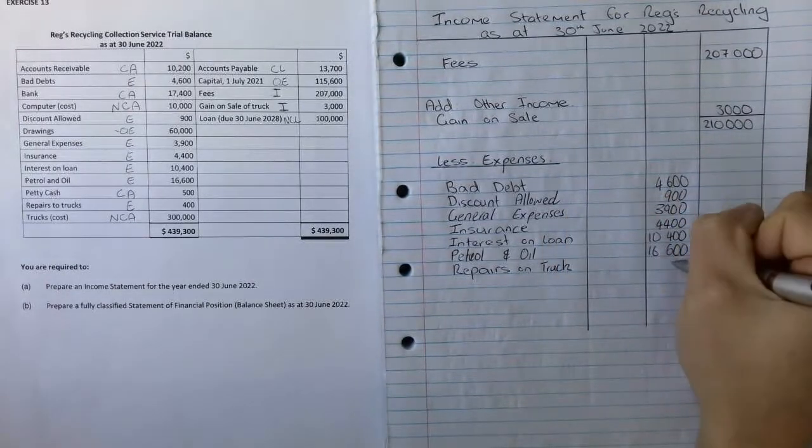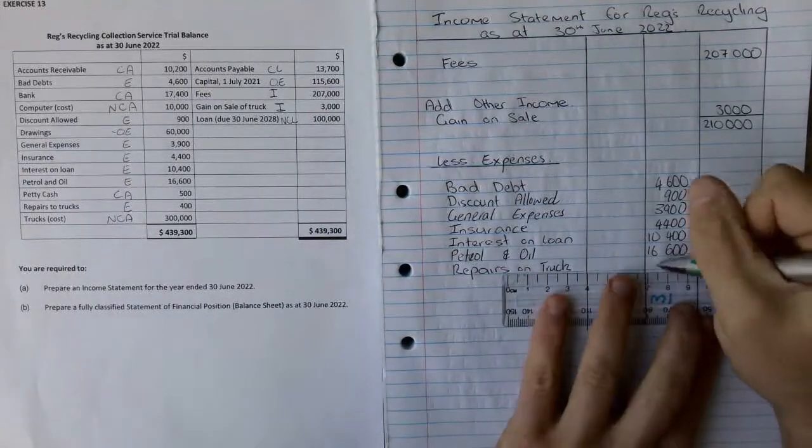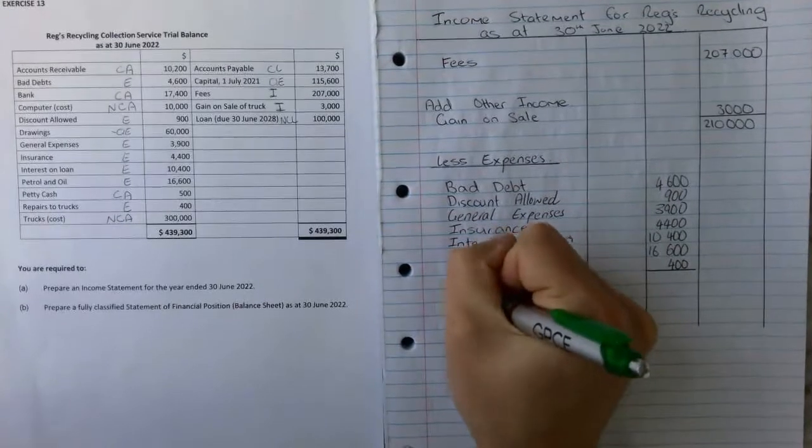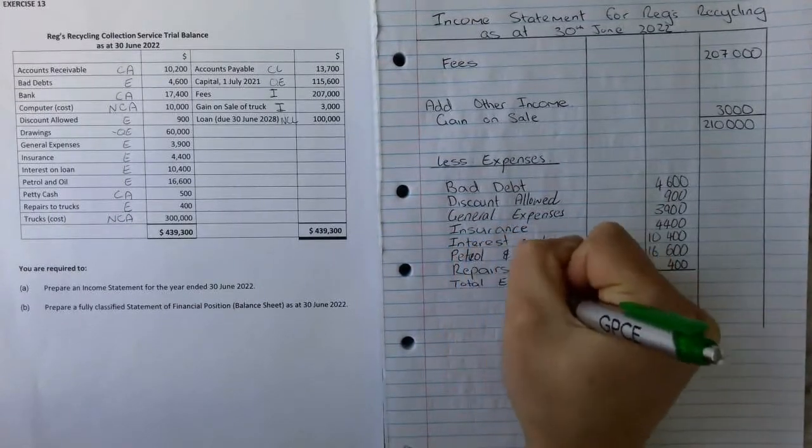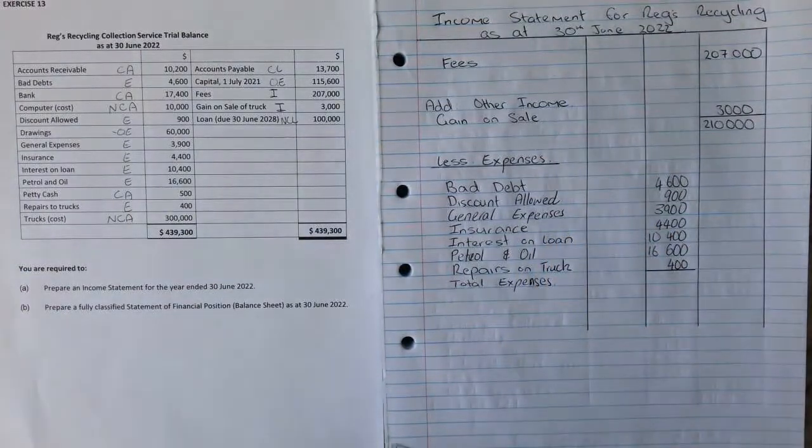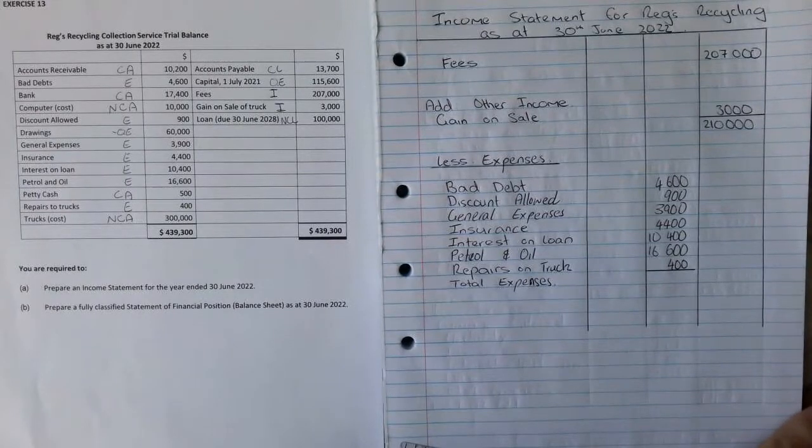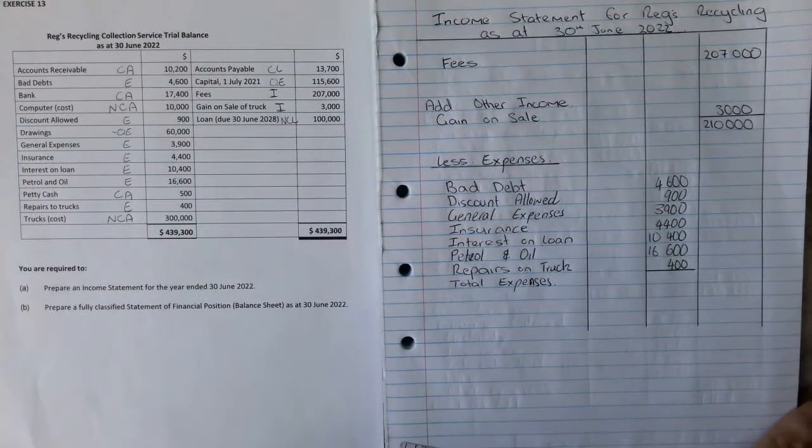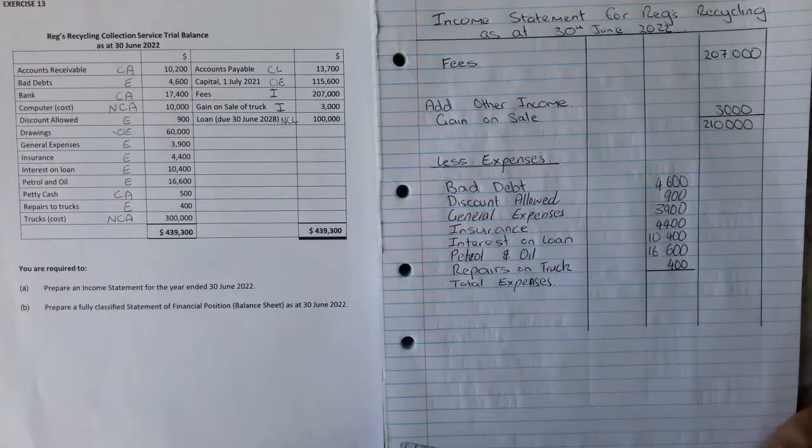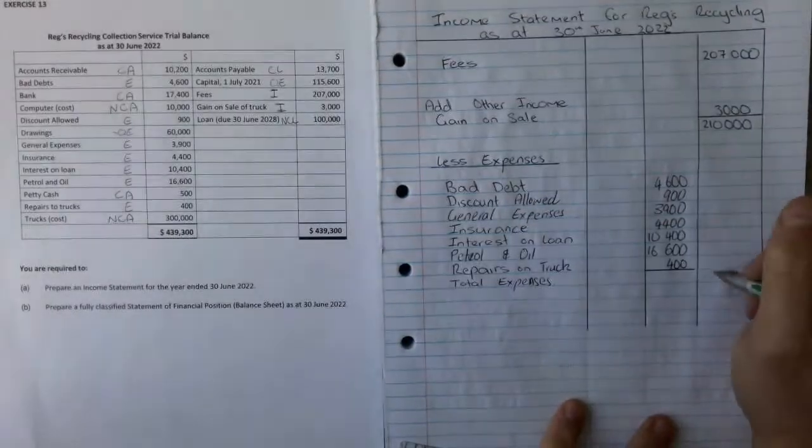As we can look through this, we can see all of our expenses are listed there. That means we can total those up and we can call this total expenses. It's $400 plus $1,600 plus $14,900 plus $10,400 plus $4,900 plus $3,900 plus $900 plus $4,600 and that equals $41,200.